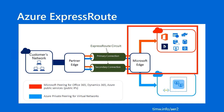Besides the fact that ExpressRoute bypasses the internet, the other important thing to know is that there's no encryption on the line. You would have to implement your own encryption if you have security needs to ensure that data in transit between your edge and Microsoft's edge is encrypted. That would be a decision factor for some businesses who might choose Site-to-Site VPN over ExpressRoute if they need out-of-the-box end-to-end encryption.